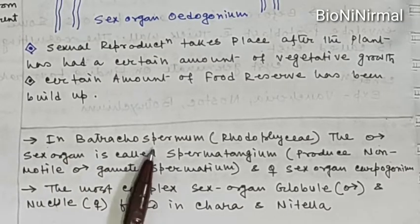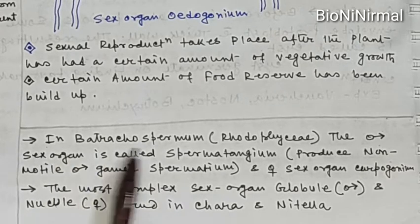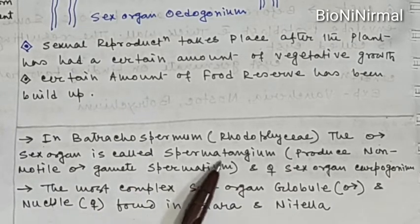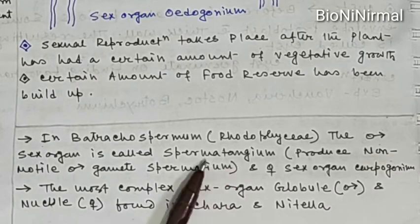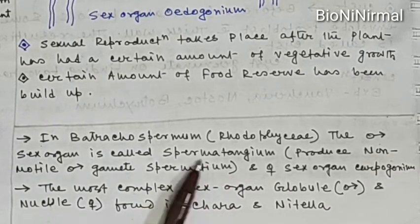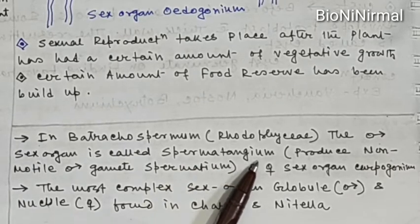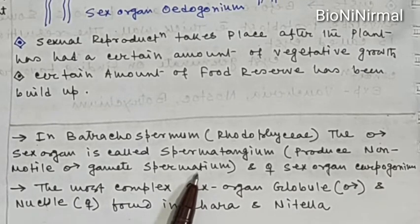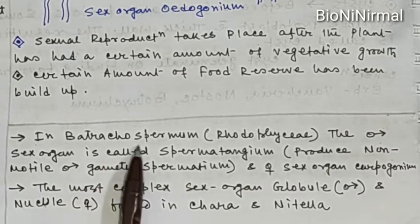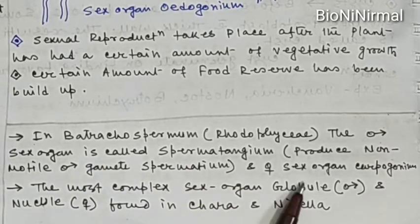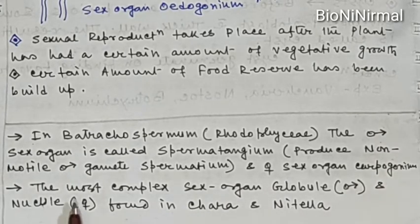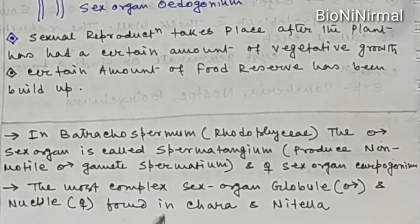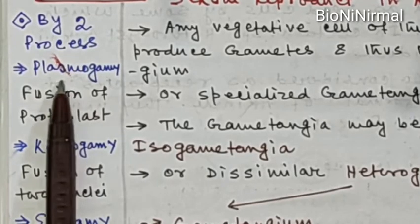A few important points: In Batrachospermum, a kind of Rhodophyceae, the male sex organ is called spermatangium, and it produces non-motile male gametes — this is important because usually male gametes are motile. The female sex organ in Batrachospermum is called carpogonium. The most complex sex organs, the globule (male) and nucule (female), are found in Chara and Nitella.